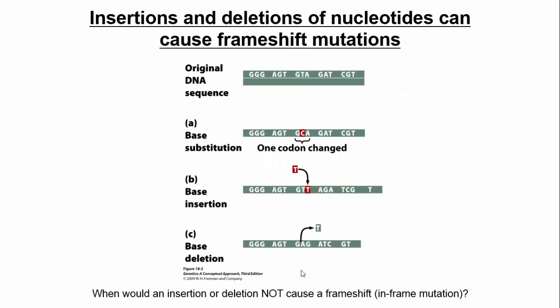We could also have insertions or deletions, and these can lead to things called frame shifts. Here you can see our original DNA sequence. If we had a base pair substitution, we at maximum are going to affect one amino acid. However, if we have a base pair insertion — putting a new base in — or a deletion — taking a base out — everything after that is either shifted one base to the right or one base to the left. So it affects not only that amino acid for that codon, but everything downstream of it. Insertions and deletions that lead to frame shifts are often very deleterious.